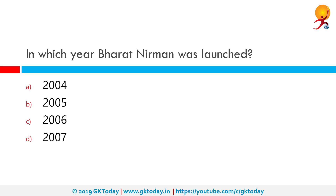In which year was Bharat Nirman launched? The correct answer is 2005. Bharat Nirman is an Indian business plan for creating and augmenting basic rural infrastructure. It comprises projects on irrigation, roads, housing, water supply, electrification and telecommunication connectivity.